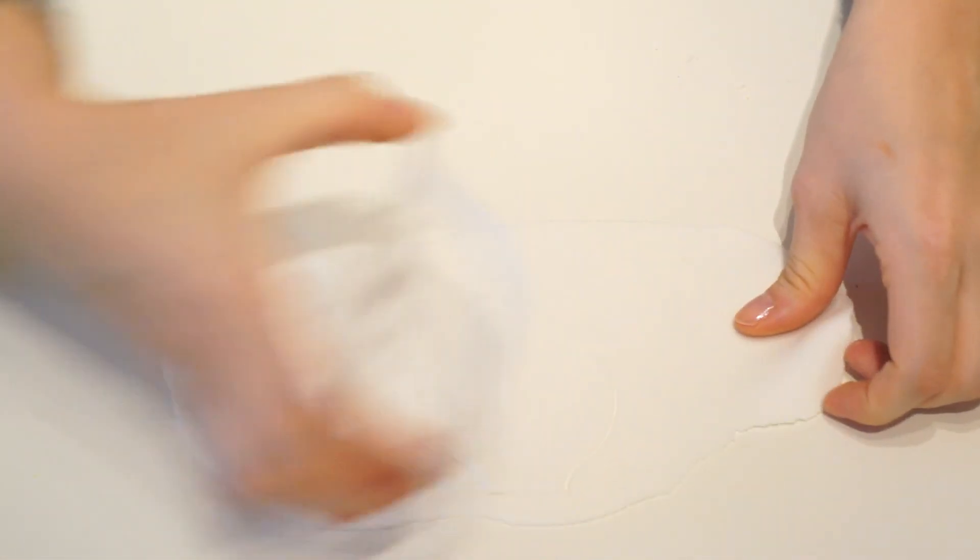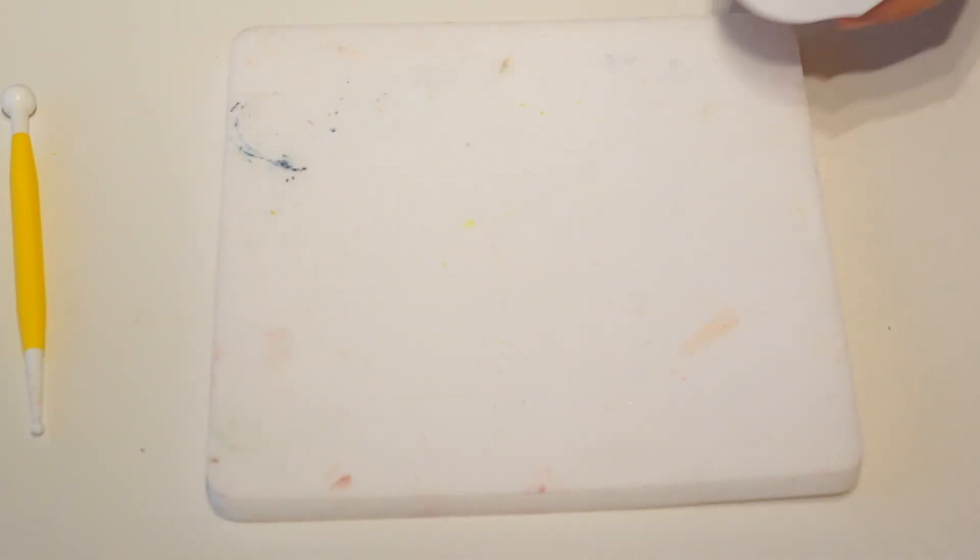What I'm going to do is roll some white petal paste out. I've got that about one millimeter thick. We're going to cut out the larger petal.